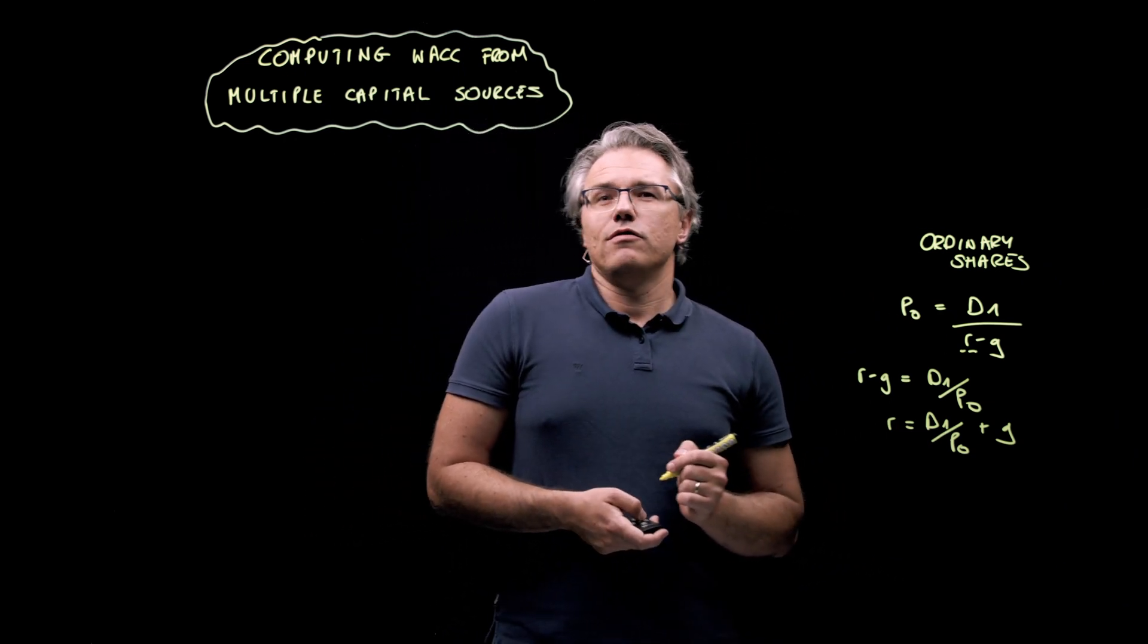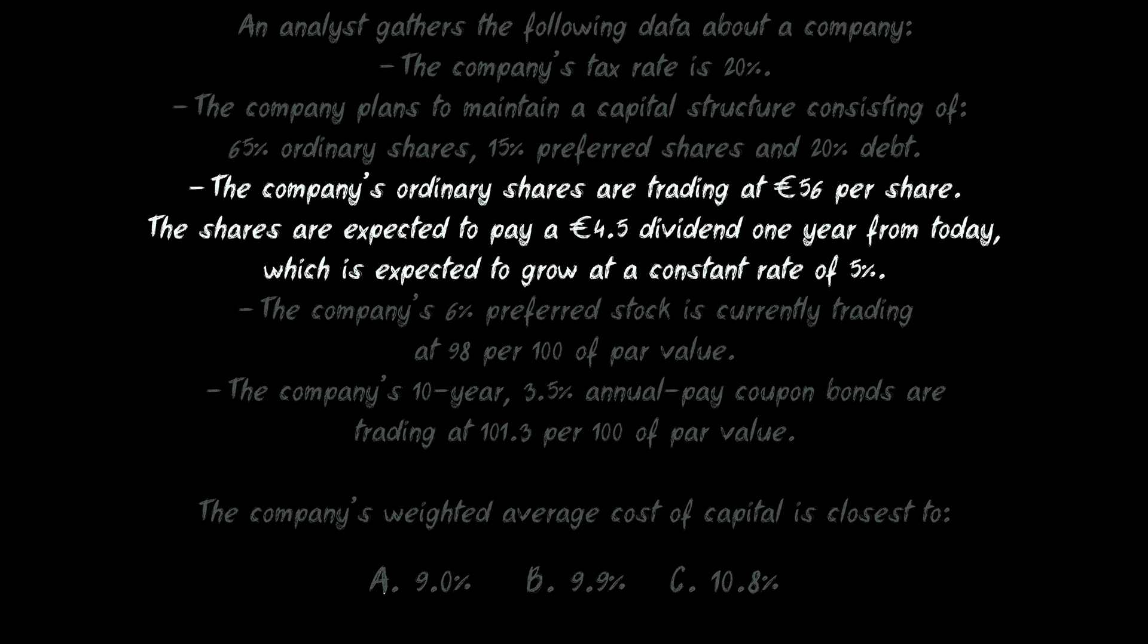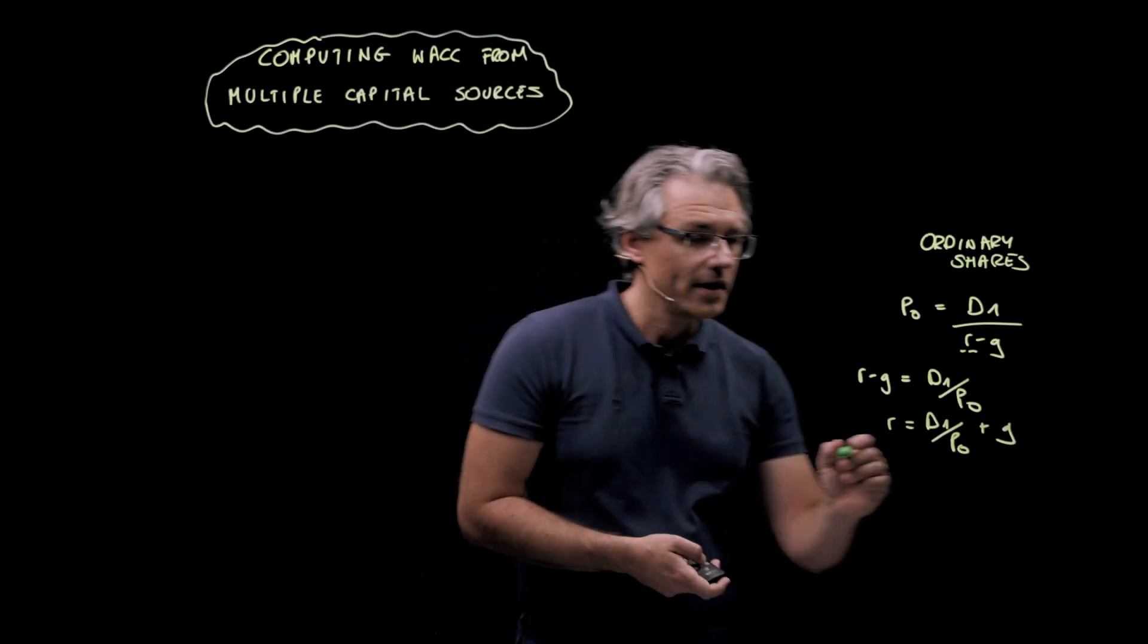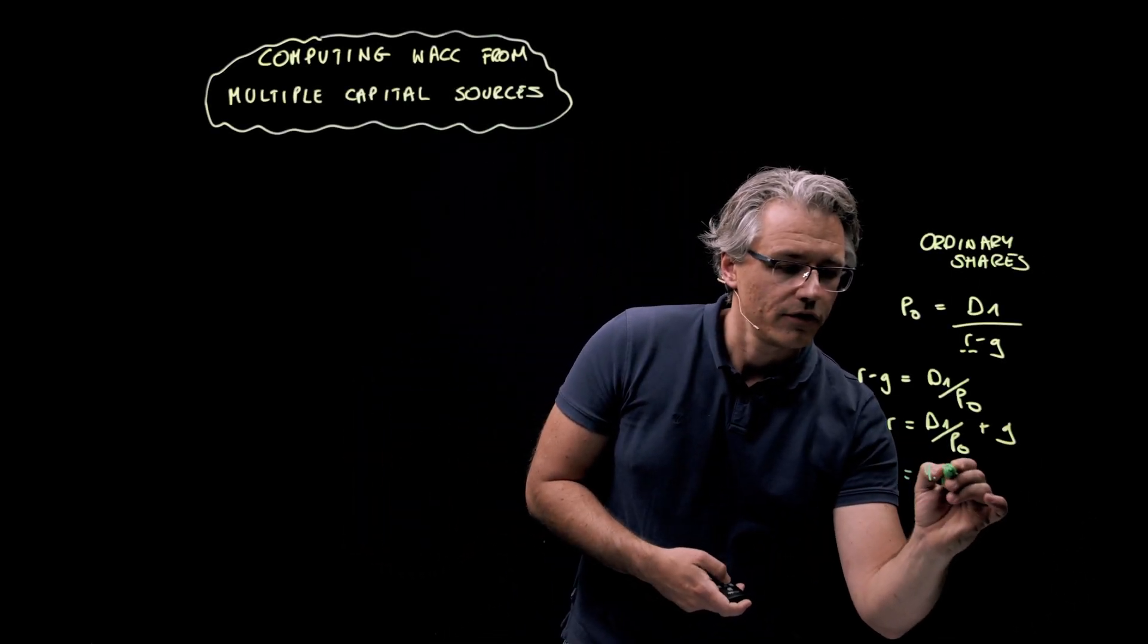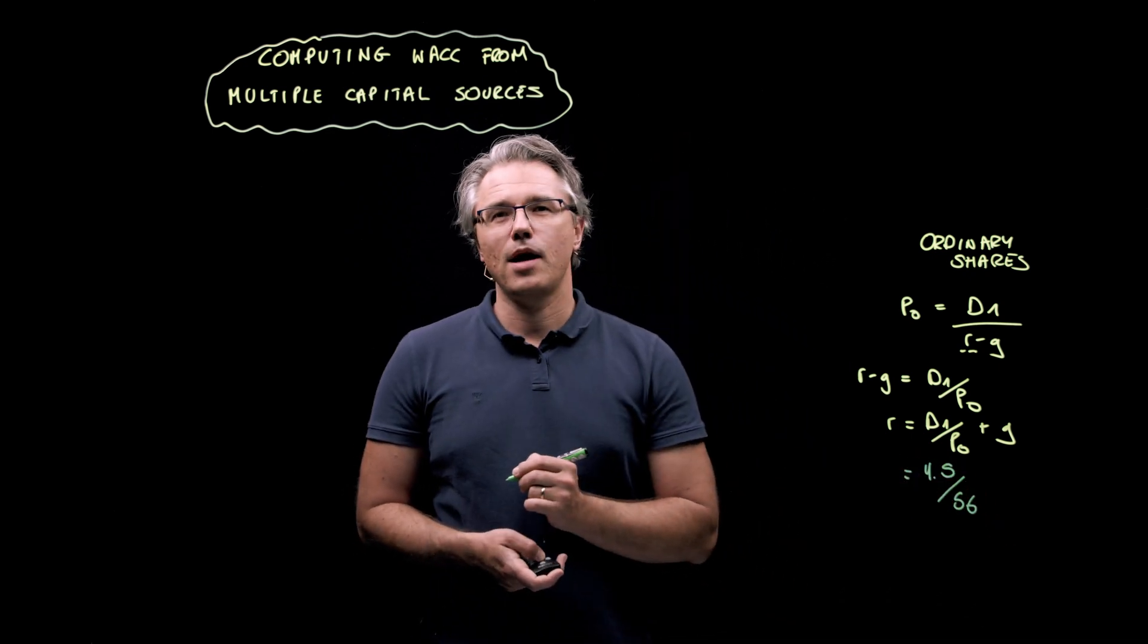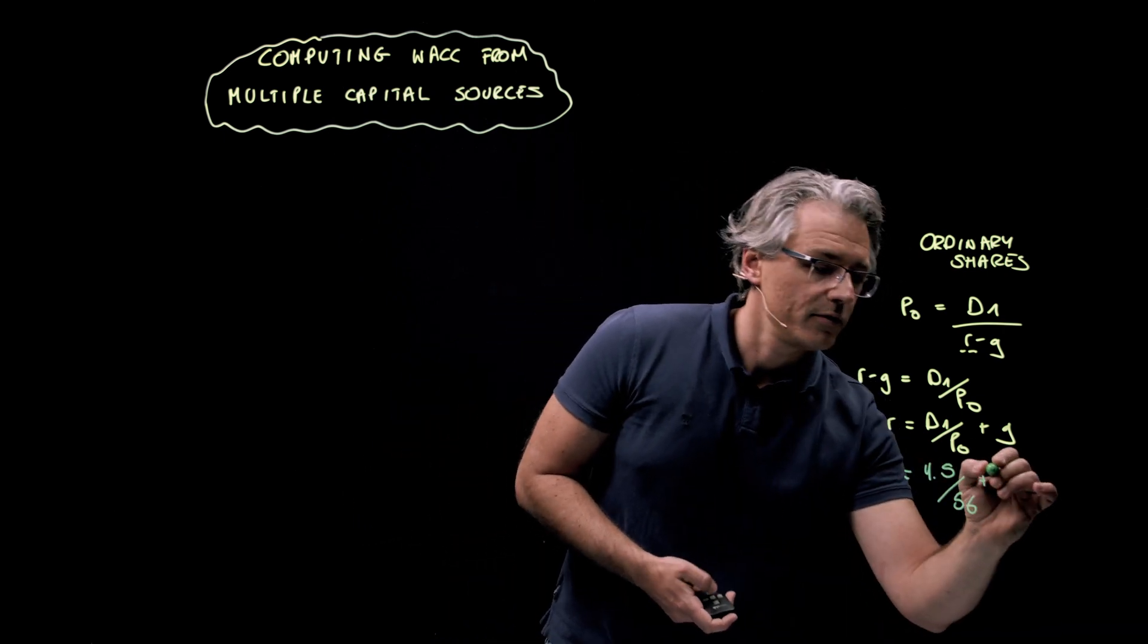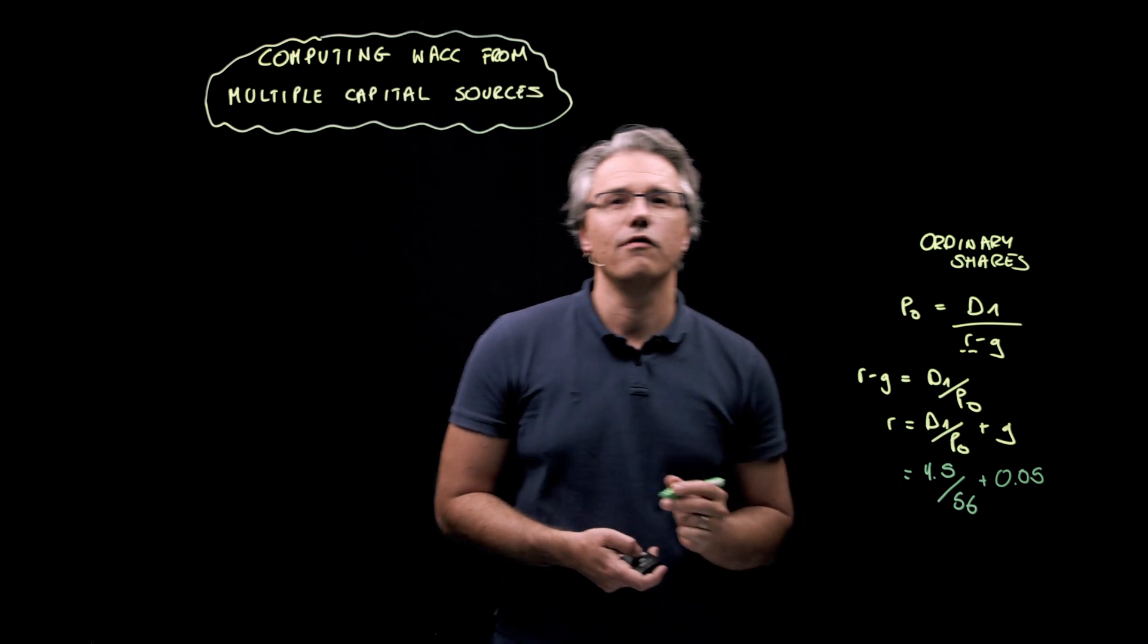Checking the question for the relevant data, the company's ordinary shares are trading at 56 euro per share. The shares are expected to pay a four and a half euro dividend one year from today, which is expected to grow at a constant rate of 5%. So, we get 4.5 for D1 over 56, the share price today, plus a growth rate of 5% or 0.05.